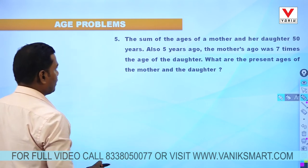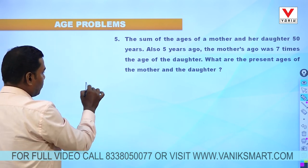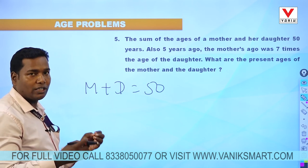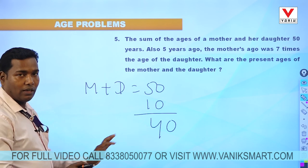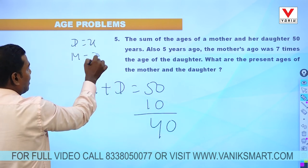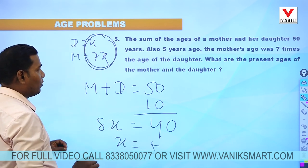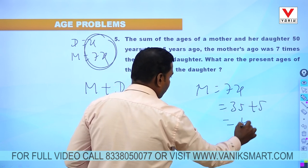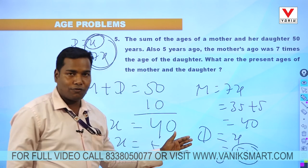Question 5: The sum of the age of the mother and daughter is 50 years. 5 years ago, the mother's age was 7 times the age of the daughter. 5 years ago, both ages decrease by 5, so total decrease is 10, making the sum 40. Suppose daughter's age 5 years ago is x, then mother's age is 7x. So 8x equals 40, giving x equals 5. The daughter's age 5 years ago was 5, so present age is 10. Mother's age 5 years ago was 35, so present age is 40.